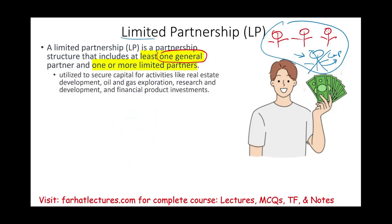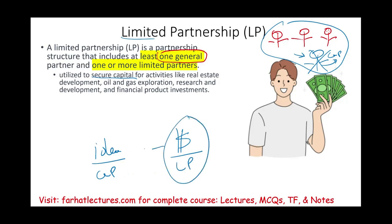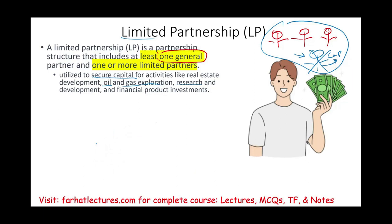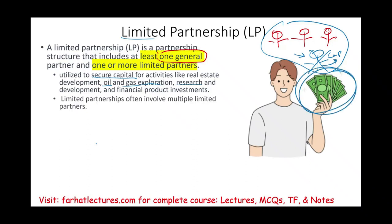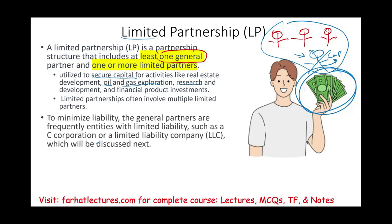Limited partnership is utilized to secure capital for activities. You have a person with an idea — the general partner — and people with money who are essentially investors. Limited partnerships are used in oil and gas exploration, research and development, and financial product investment. You could have many limited partners — say 10 people and one general partner. To minimize liability, general partners are frequently entities with limited liability, such as a C corporation or an LLC, which allows them to raise capital while reducing personal exposure.